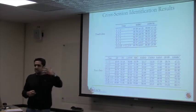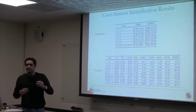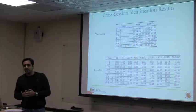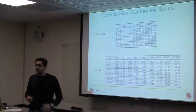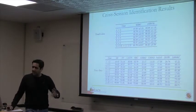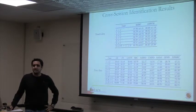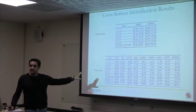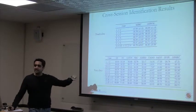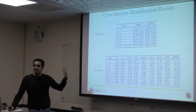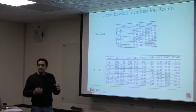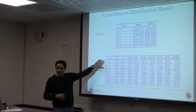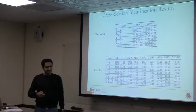Before, the training data had a similar distribution to the testing data. Here, the training distribution is very different from the testing distribution. This problem is very common in machine learning and computer vision — it's known as the dataset bias or dataset shift problem. Regardless of the cause, any distributional change that occurs after learning a classifier will degrade performance at testing. This is a major problem we have to overcome to make the system practical. We need to adapt the sparse representation-based classifier trained on one session to another session.